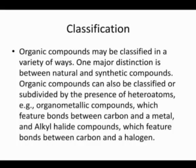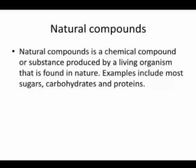Organic compounds are natural and synthetic, and may be classified according to the presence of hetero atoms. A natural compound is a chemical compound or substance produced by living organisms that is found in nature. Examples include most sugars, carbohydrates, and proteins.